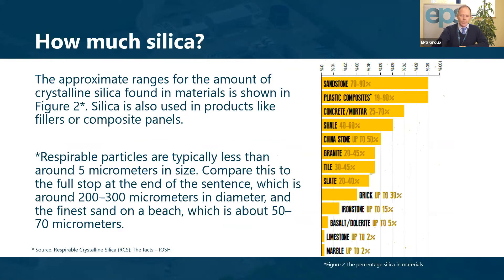How much silica is contained in some common construction materials? The two to focus on are concrete and mortar and their derivatives, and plastic components. Some of these products can contain anything from 17 to 90% silica. Composite panels, for instance, are a prime example of something that contains quite a lot of silica.